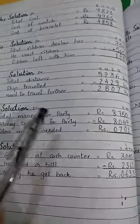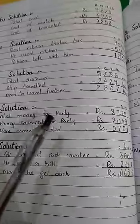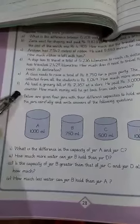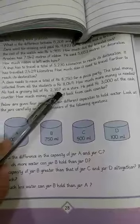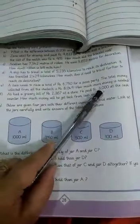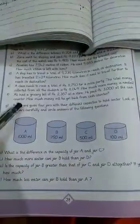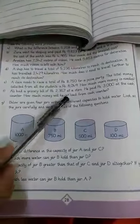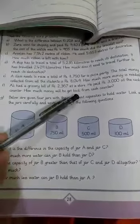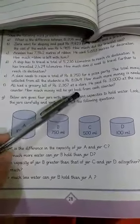When you have to write word problems, you have to write statements, not always just calculations. Number F: Ali had a grocery bill of Rs. 2,367 at a store. He paid Rs. 3,000 at the cash counter. How much money will he get back from the cash counter?